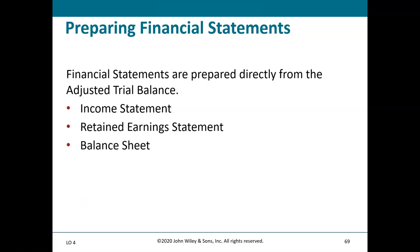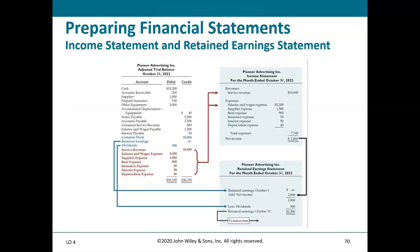Financial statements are prepared directly from the adjusted trial balance. For the income statement, we identify revenue and expense accounts from the trial balance, list them in income statement format, and calculate net income. That net income feeds into the retained earnings statement: beginning retained earnings plus net income minus dividends equals ending retained earnings.